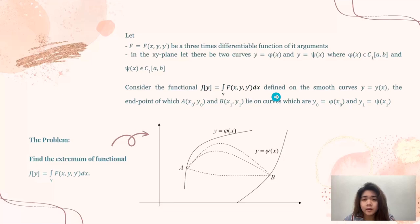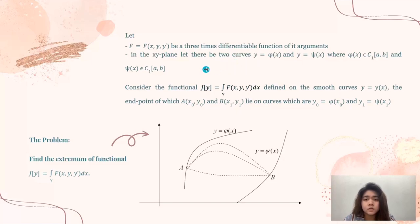We let f be a three times differentiable function of its arguments. In the xy-band, let there be two curves y equals vx and y equals sinx, where vx is a subset of C1 on the interval a to b, and sinx is also a subset of C1 on the interval a to b.